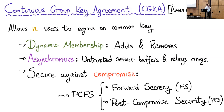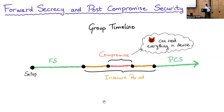We want some security properties to hold called PCFS, which is the combination of forward secrecy (FS) and post-compromised security (PCS). For those of you not familiar with these two notions, let me recall them very quickly.